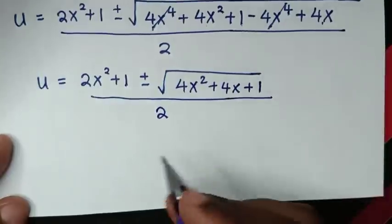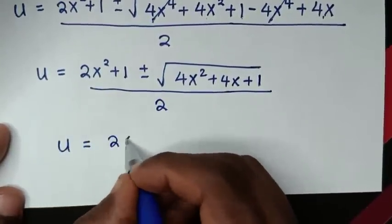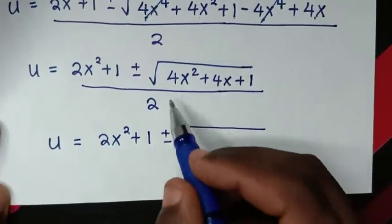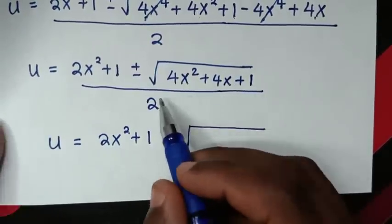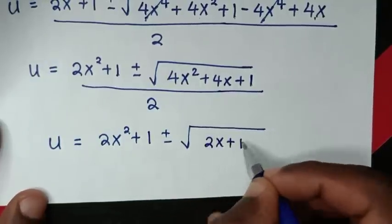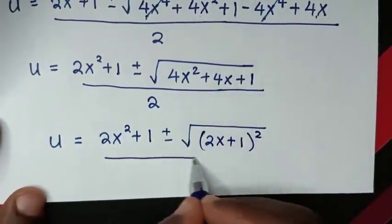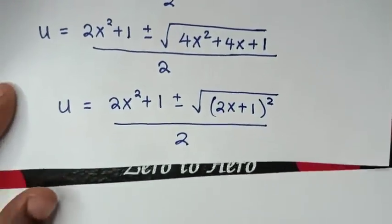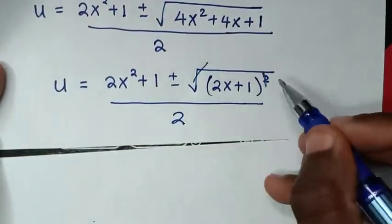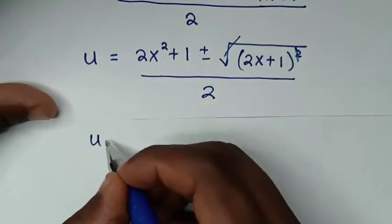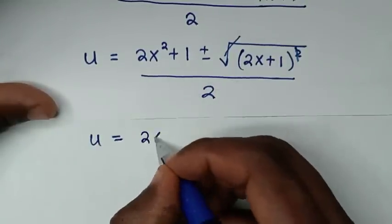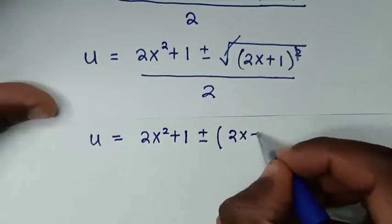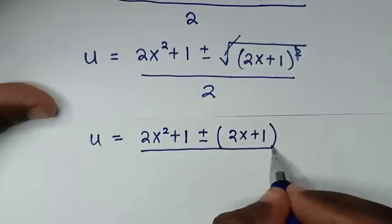So we have: u equals 2x squared plus 1, plus or minus square root of 4x squared plus 4x plus 1. This expression under the square root is the same as bracket 2x plus 1 squared. So the square root cancels with the square, giving: u equals bracket 2x squared plus 1, plus or minus bracket 2x plus 1, all over 2.